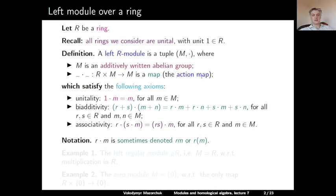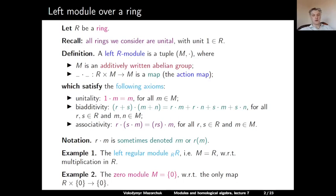A small remark on notation: r·m is sometimes denoted simply as rm or r(m). Here are some examples. First, the left regular module R — the module itself equals R as an abelian group, and the action is multiplication. All axioms are satisfied by the ring multiplication properties. Second, the zero module M, where M is the zero abelian group consisting just of the identity element zero. The only map from R × {0} to {0} sends all elements to zero, so all axioms are obviously satisfied.